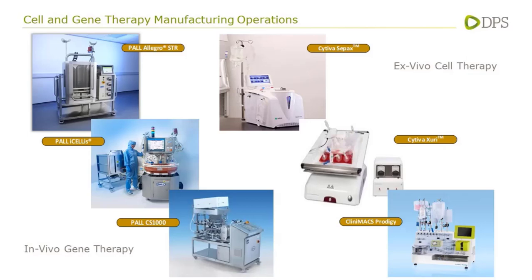Looking at ex vivo cell therapy using CAR-T as an example: CAR-T being a personalized medicine approach, the batch size always relates to one patient. Small scale benchtop equipment — such as a separation system and cell expansion system — would be used in the manufacture of these processes. The Clinimax Prodigy provides an example of a fully integrated production line for a cell therapy process, whereas other equipment separates the unit operations into individual pieces of equipment.